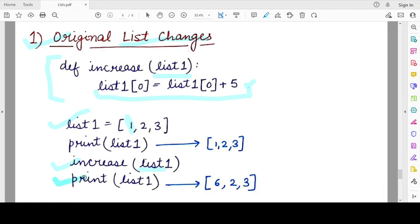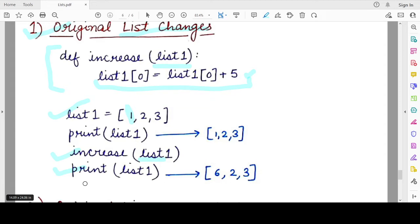After calling the function, when the function returns to the next and the last statement which is the print statement, the updated value of the list is 6, 2, 3. This was the first scenario when we pass a list to the function as an argument and the value of the list changes.